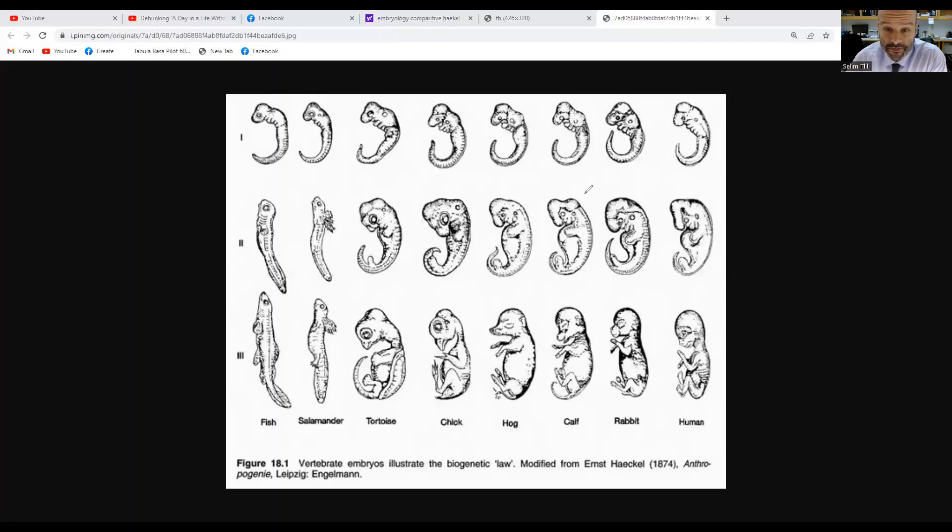It also tells us something about the degrees of relation. We can see, for example, there are more similarities to the embryos here, and as the embryos continue to develop we see further similarities of these two here.